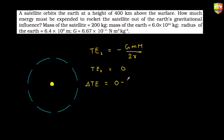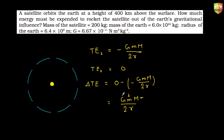The energy required is zero minus (−GMm/2r), which equals GMm/(2r). Here m is the mass of the satellite, M is the mass of the earth, and r is the distance from the center. That's 400 km from the earth's surface, so r = 4×10⁵ + 6.4×10⁶ m.